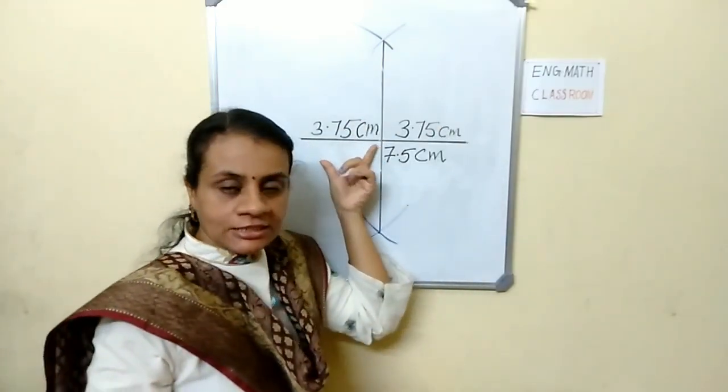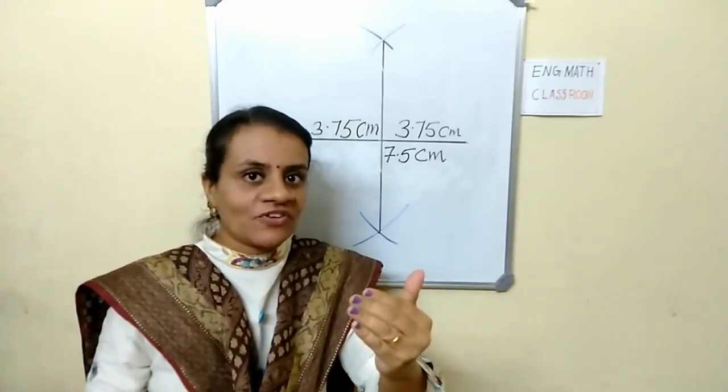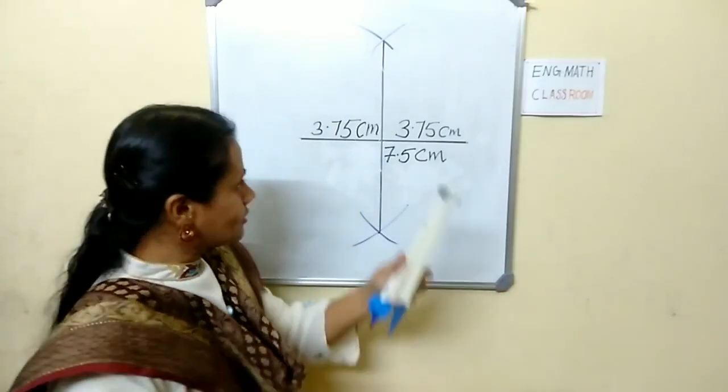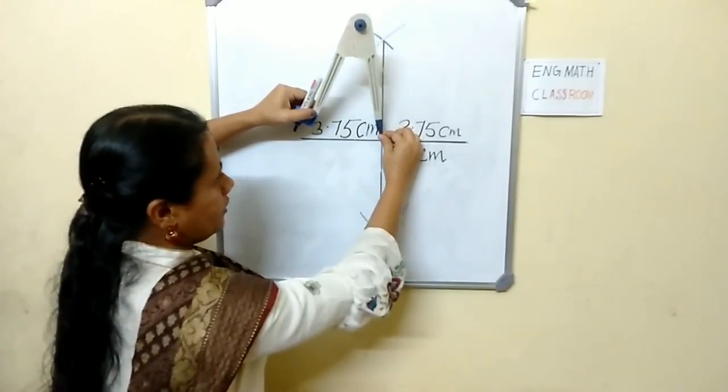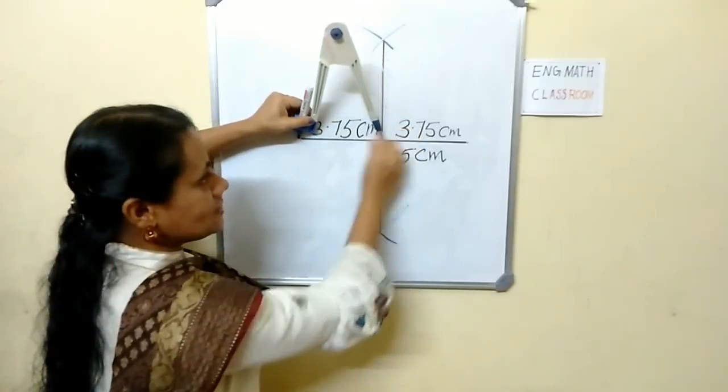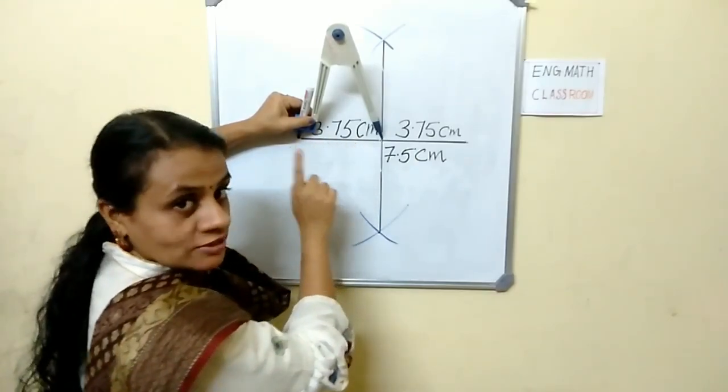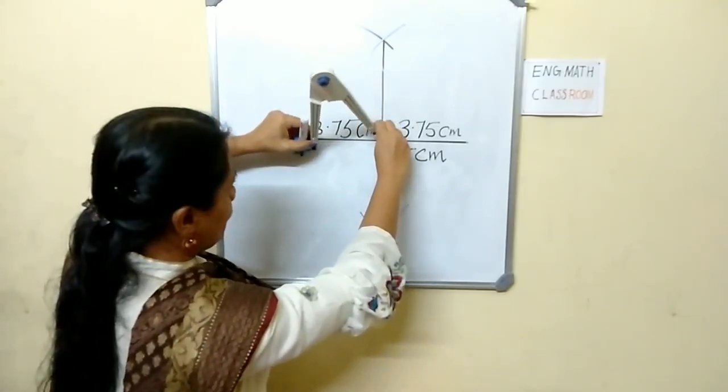Now this length we can consider as the radius of a circle. Taking this length, keep the needle here. This length is the radius of the circle, 3.75. Now we can draw a circle like this.